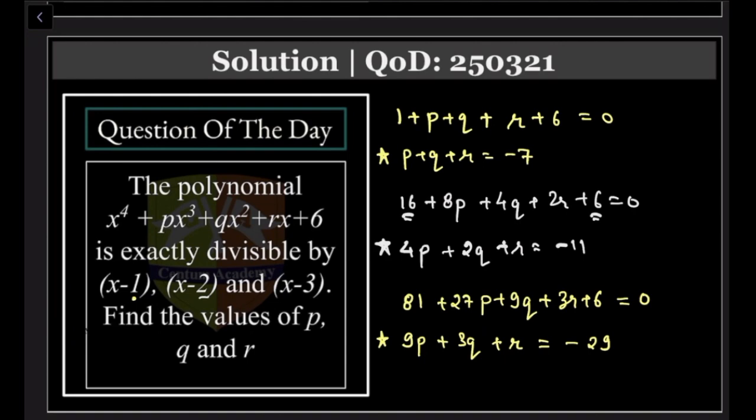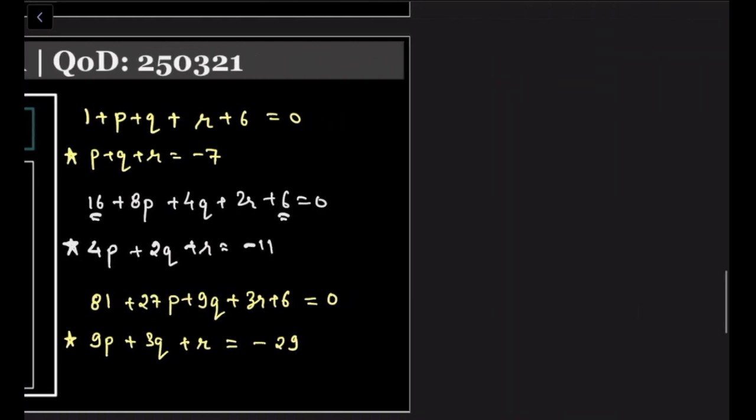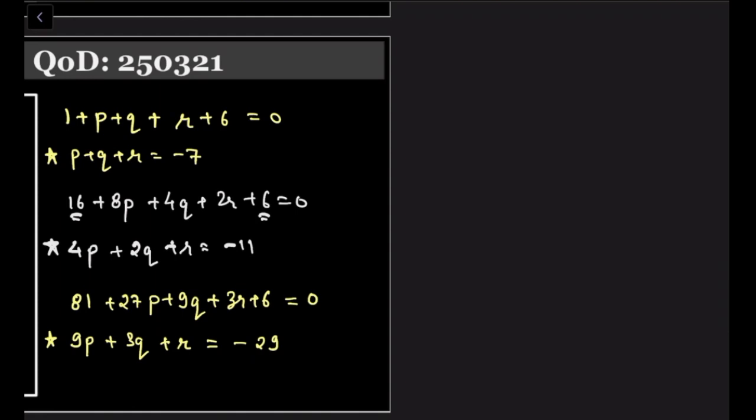Good. Now there are 3 equations, 3 variables, solve them. So if I subtract equation 2 and equation 1, then I will get 3P + Q = -11 + 7 = -4. Clear?